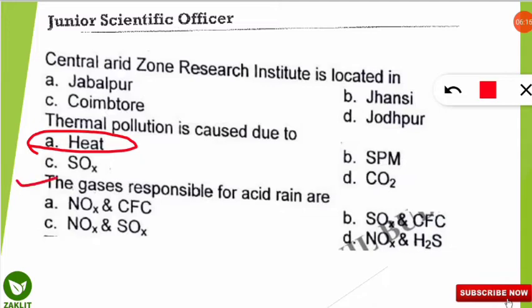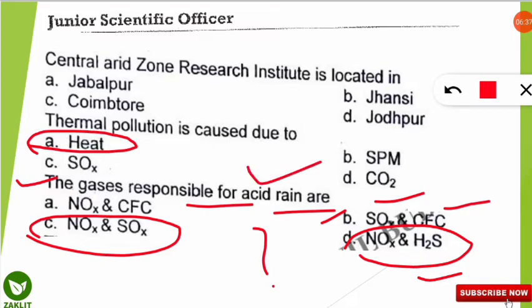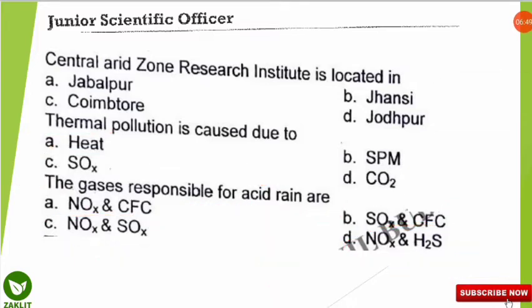The next question: the gases responsible for acid rain are what? One option shows SOx (oxides of sulfur) and CFCs; another shows oxides of nitrogen and H2S. The correct option is C — oxides of nitrogen and oxides of sulfur cause acid rain. This is a very frequently asked and important topic. If you want to know more about acid rain and the reactions, you can check the link in the I-button — I have already made a video on this.